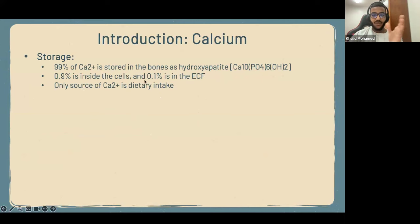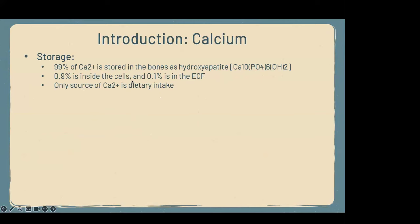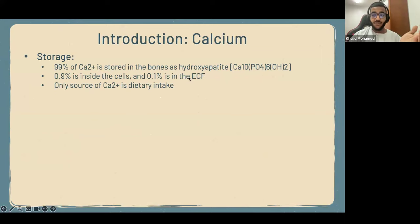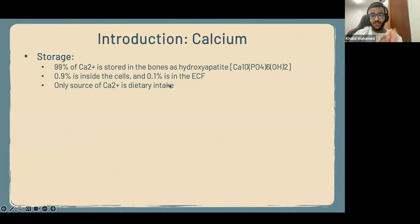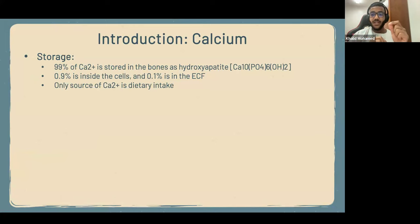The remaining 1%: 0.9% of calcium is inside the cells, and 0.1% is in the extracellular fluid, whether in the plasma or in the tissue. One might ask why it's so little in the extracellular fluid. That's because calcium is very important in many body mechanisms like cardiac muscle contraction, skeletal muscle contraction, and nerve transmission. Therefore, the levels of calcium in the blood must be very tightly regulated. The only source for calcium is dietary intake — it cannot be synthesized in the body.